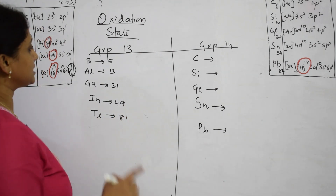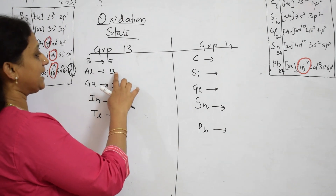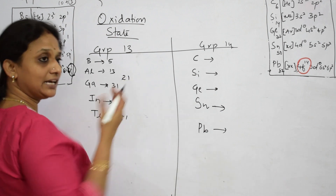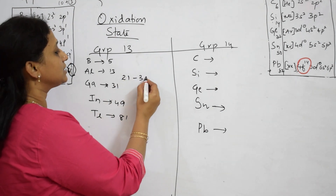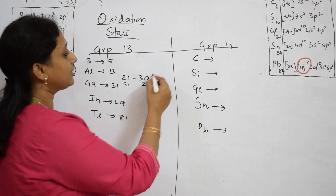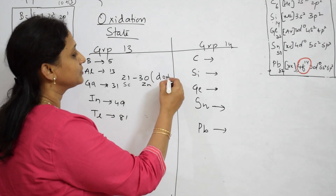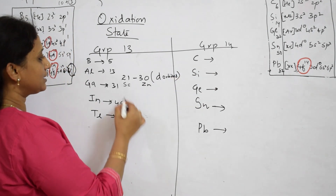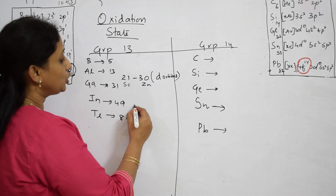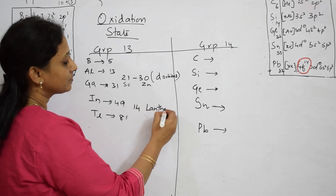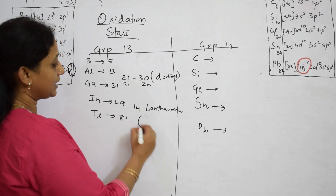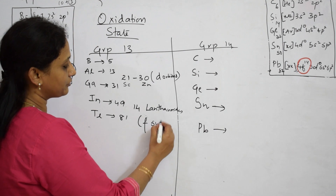When you see in the periodic table, between aluminium and gallium, from element 21 to 30, there are elements — from scandium to zinc — which have D orbitals. And between indium (49) and thallium (81), you have 14 lanthanide elements present. Just go through your periodic table — 14 lanthanides are present, and they have the F subshell or F orbital.